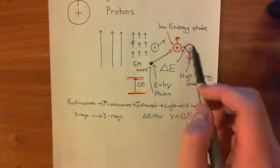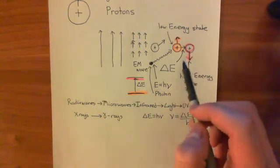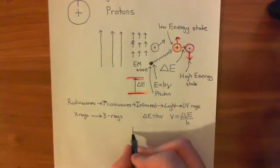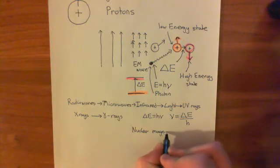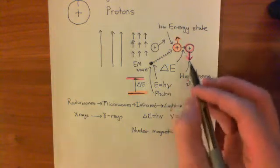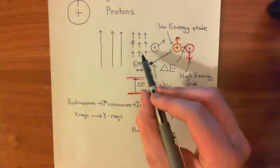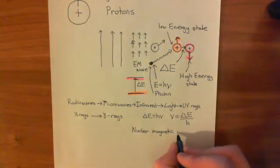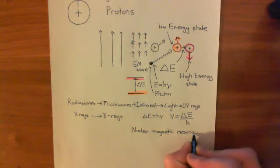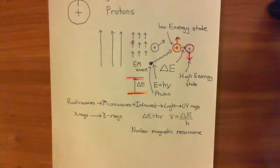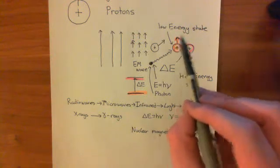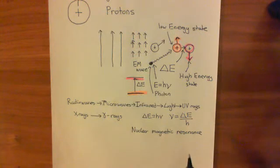That phenomenon of transferring from the low energy state into the high energy state is known as nuclear magnetic resonance. It's called nuclear because these protons are in the nucleus of atoms; magnetic because the protons are in an external magnetic field; and resonance because when the photon you fire at the proton is exactly the right frequency, the photon is said to resonate with the proton, elevating its energy. Only if it's exactly the right frequency will this resonance occur.